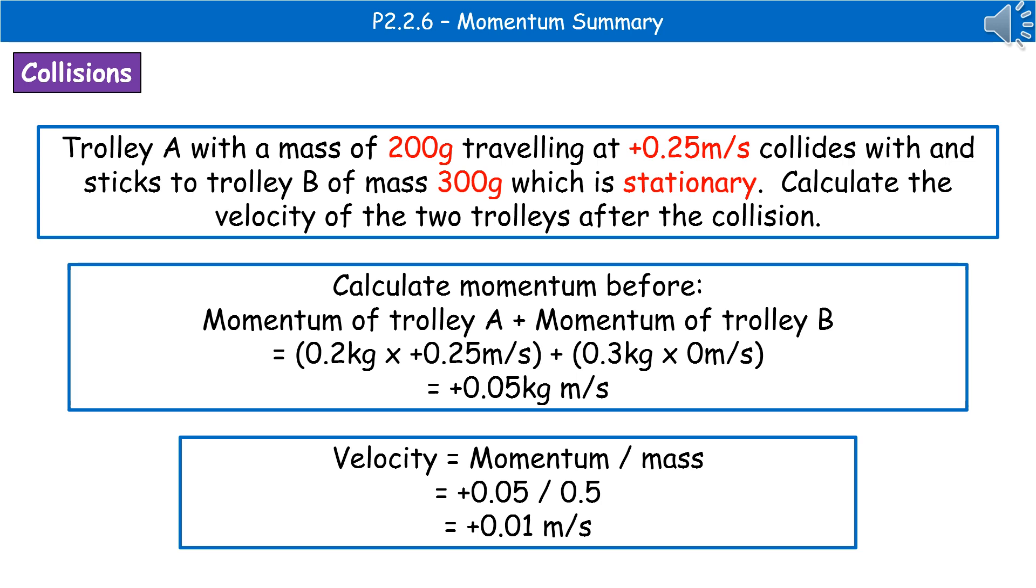And I've done it in red there for you. Next thing to do, we need to calculate the momentum before, because we have information about that which we can then carry out. So, the momentum of trolley A plus the momentum of trolley B equals 0.2, which is our mass in kilograms, remember, times by plus 0.25. So, that's our trolley A, but we have to add on trolley B, which we know is stationary, therefore its initial velocity was zero, and its mass, 300 grams, converted to 0.3 kilograms. So, our final calculation there is 0.2 times by plus 0.25 plus 0.3 times 0, which gives us plus 0.05 kilogram meters per second as our momentum before.